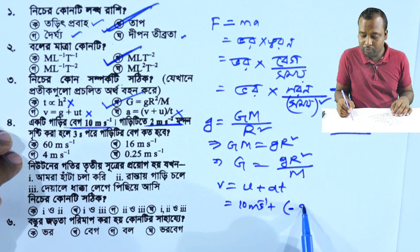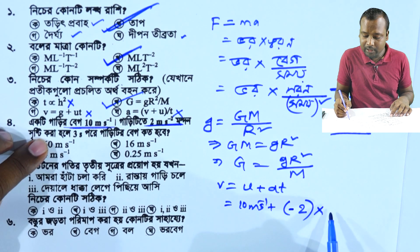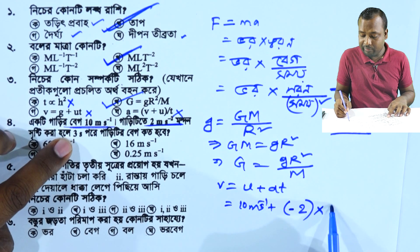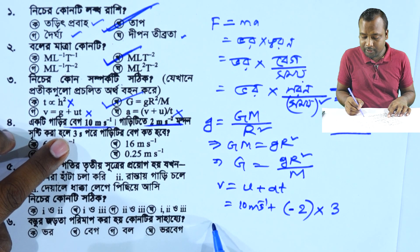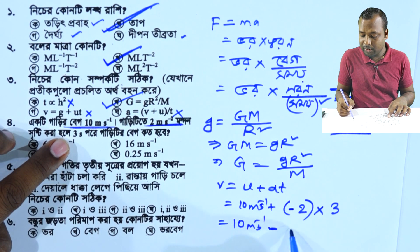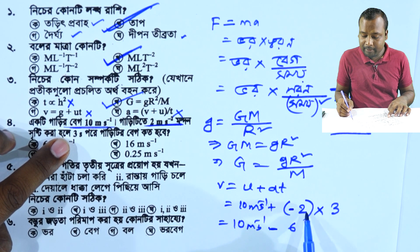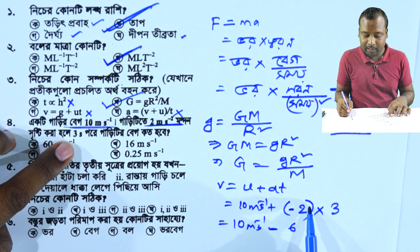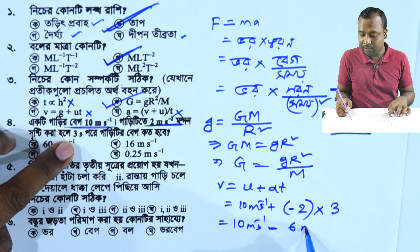The deceleration is minus 2 into t, which is 3 seconds. We know that u is 10 meters per second, and at the maximum point it is going to be 0, and lambda will be 6 seconds. So at that point it is 0, and another 1 meter per second.